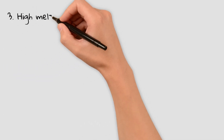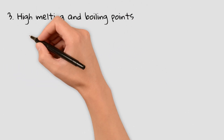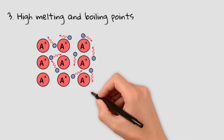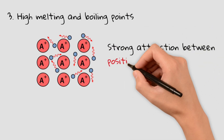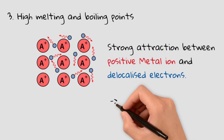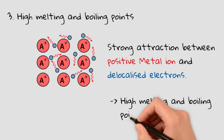Third, high melting and boiling points: the strong attraction between metal ions and the delocalized electrons requires a lot of energy to break, making metals solid at room temperature with high melting points.